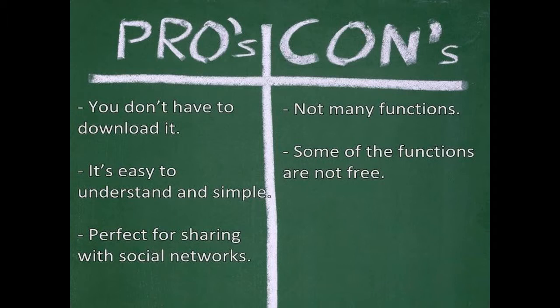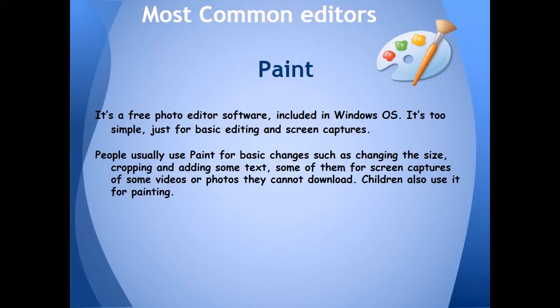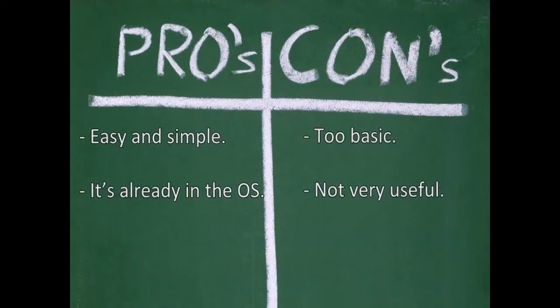Cons: not many functions, and some of the functions are not free. 3. Paint — it's a free photo editor software included in Windows OS. Pros: easy and simple, and it is already in the operating system. Cons: too basic, are not very useful.